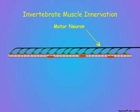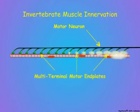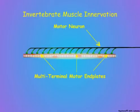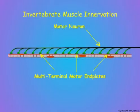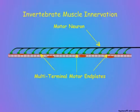Invertebrate animals may have one, two, or three motor neurons that control the contraction of a single muscle fiber, and each motor neuron has multiple end-plate junctions spread over the fiber surface. The nerve signal from a motor neuron does not generate an action potential in an invertebrate muscle fiber, but rather depolarizes the entire surface of the fiber to produce contraction.